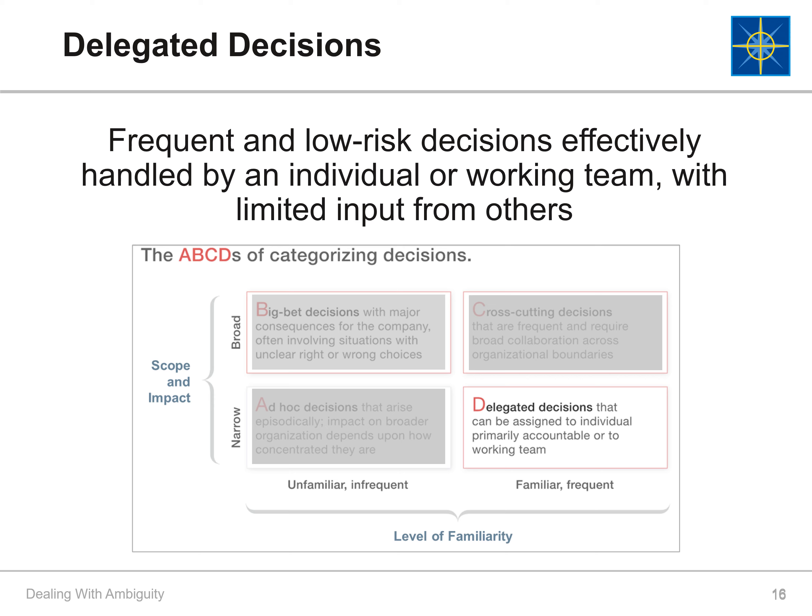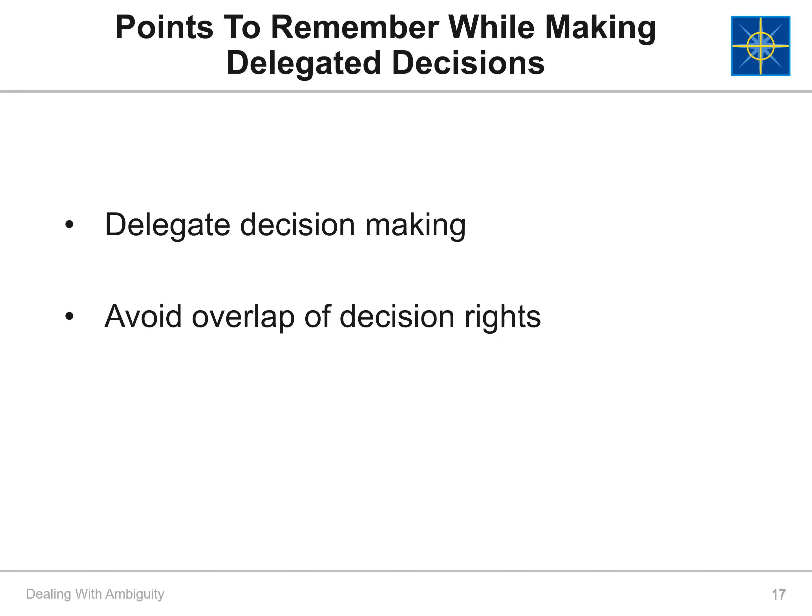The fourth type of decisions are delegated decisions. Though their scope is much smaller compared to big bet decisions, these are more recurring and part of the daily routine. They carry low risk and are handled by an individual or working team with limited input from others. Delegate the entire decision-making and let the assignee formulate a process, rather than following your set guidelines. Also, the decision authority should be clearly communicated.